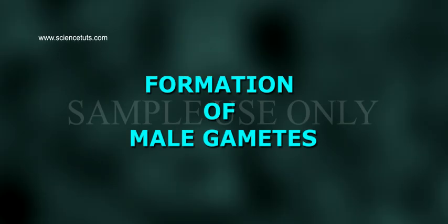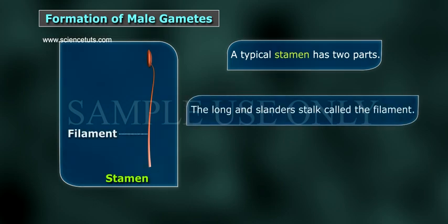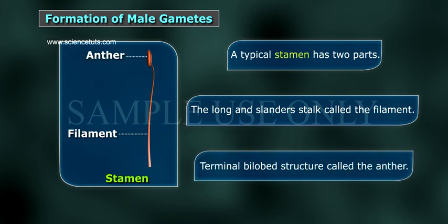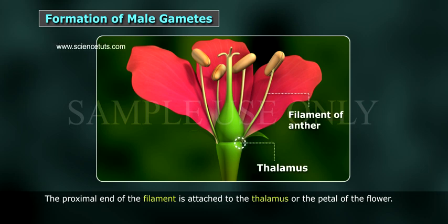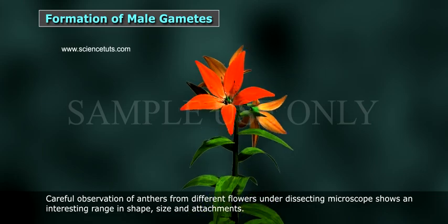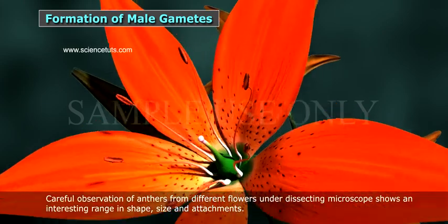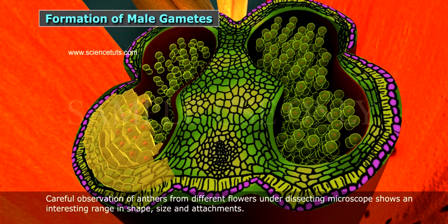Formation of male gametes. A typical stamen has two parts: the long slender stalk called the filament, and the terminal bilobed structure called the anther. The proximal end of the filament is attached to the thalamus or the petal of the flower. Careful observation of anthers from different flowers under a dissecting microscope shows an interesting range in shape, size, and attachments.